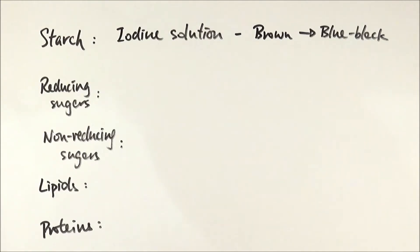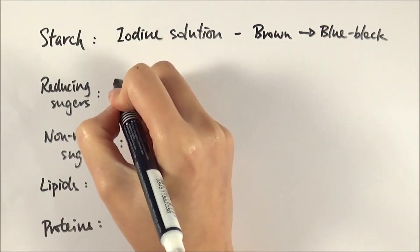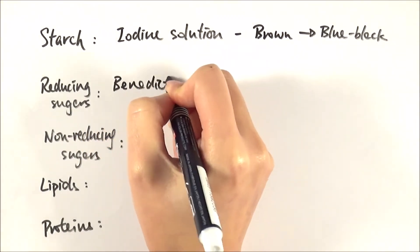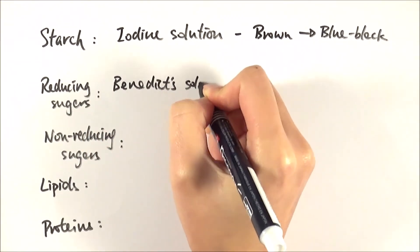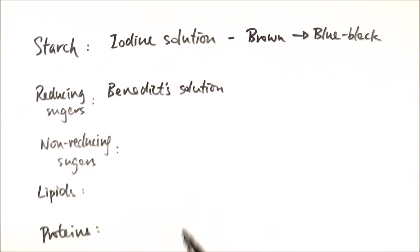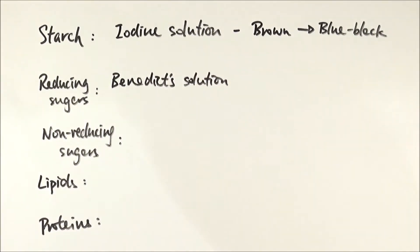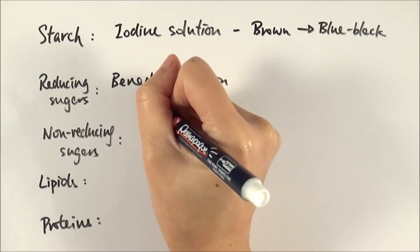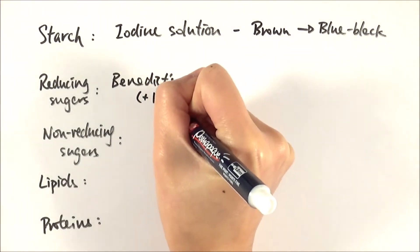The next one is reducing sugar, and we can test this by using Benedict's solution. Either say Benedict's solution or Benedict's reagent, because in past exam questions if you say Benedict's test, they don't give you the marks. You have to say use Benedict's reagent or Benedict's solution. Another key thing is you mix your sample with the Benedict's solution and you have to make sure that you heat it in a water bath.